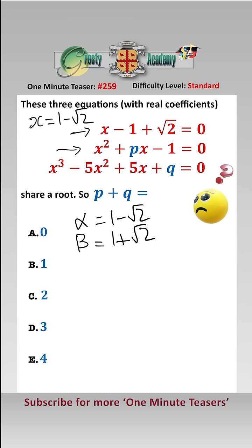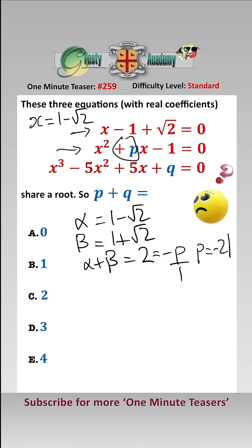Therefore alpha plus beta is equal to the sum of those, which is equal to 2. Looking at p: minus p over 1 is equal to 2, i.e. p is equal to minus 2.